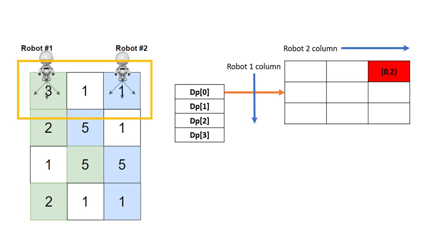Initially, robot 1 will be at column position 0 and robot 2 will be at column position (column - 1), that is the last column. We need to fill DP[0], the first row, where the column positions for both robots will be (0, 2) — where 0 signifies robot 1's column position and 2 signifies robot 2's column position in the grid.